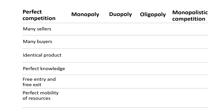Many sellers cannot influence other sellers on price. There are no influencers in the market. Buyers also have no influence in the market. Both sellers and buyers are small and have no influence at all.